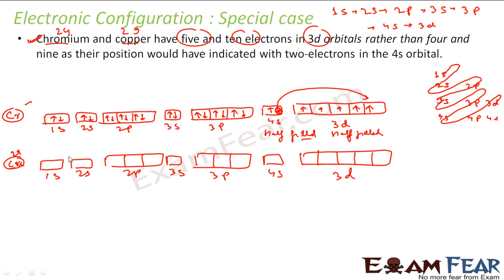1 and 2 in 1s. 3 through 10 fill 2s and 2p with pairing. 11 and 12 in 3s. 13 through 18 fill 3p with pairing. 19 and 20 in 4s. Then 21 through 29 fill the five 3d orbitals, first one each, then pairing starts.